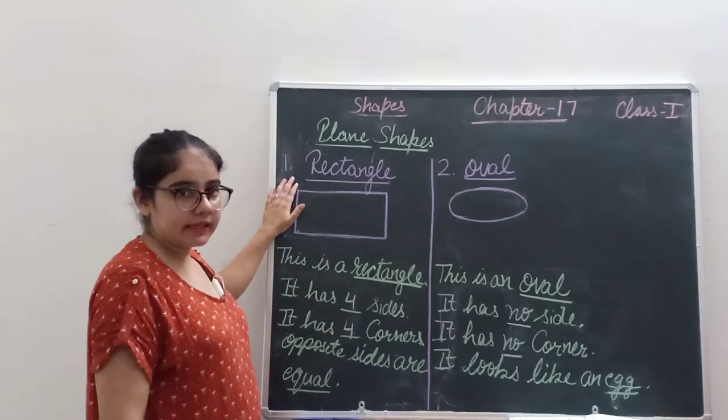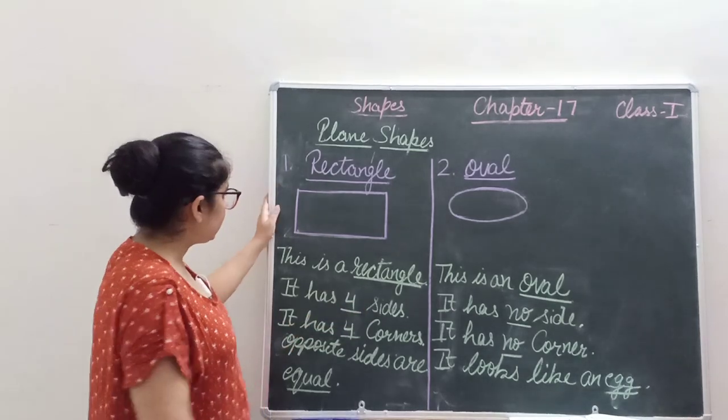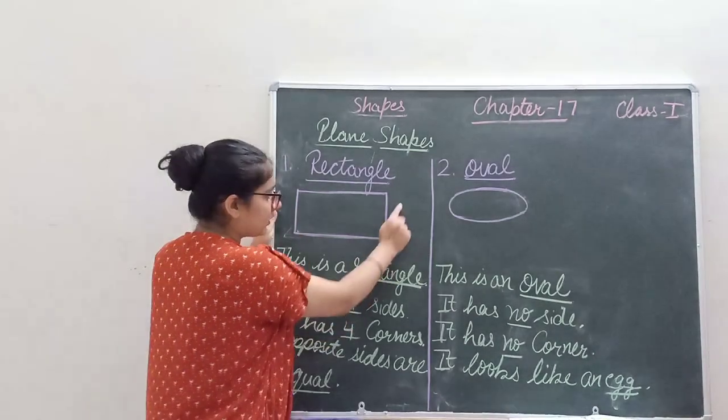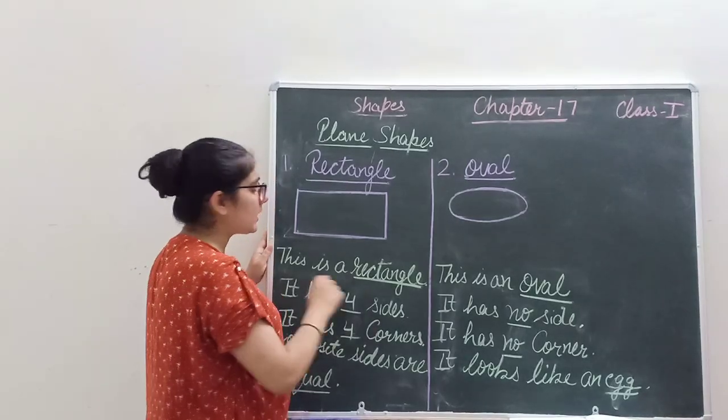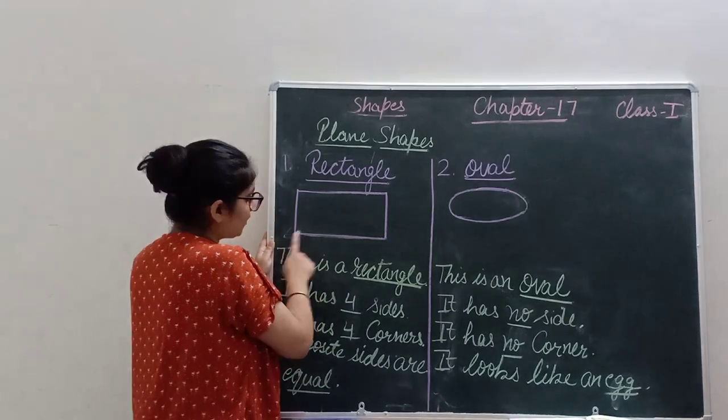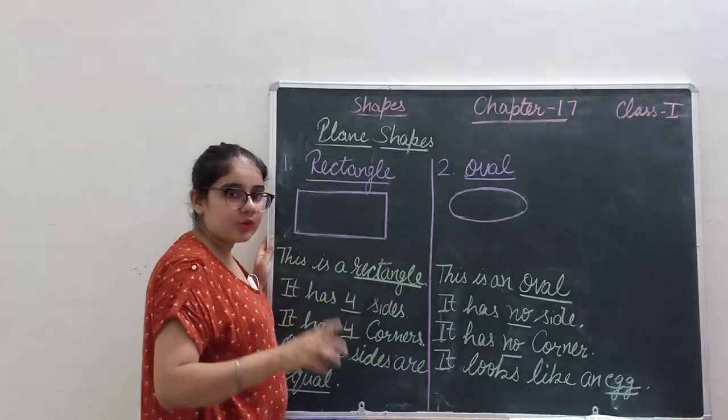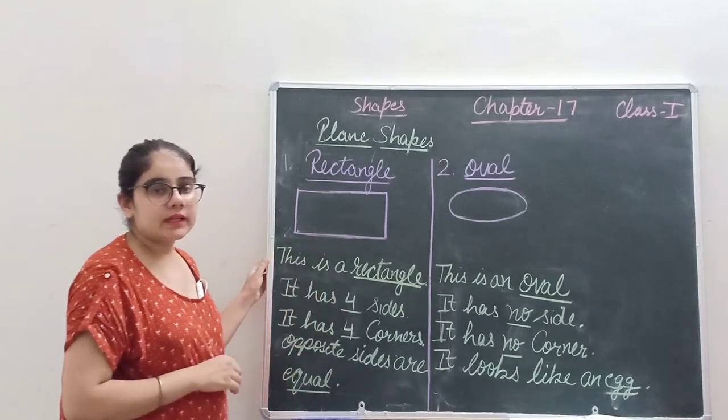First shape is rectangle. Our rectangle has four sides. You see, one, two, three and four. There are four sides in a rectangle. It has four corners. Corners means where two lines meet. One, two, three, four. It has four corners and opposite sides of rectangle are equal.